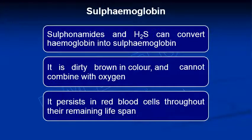The fourth derivative is sulfhemoglobin. Sulfonamides and hydrogen sulfide (H2S) can convert hemoglobin into sulfhemoglobin, which has a dirty brown color. Like methemoglobin, sulfhemoglobin cannot bind oxygen. It persists in the red blood cells throughout their entire lifespan.